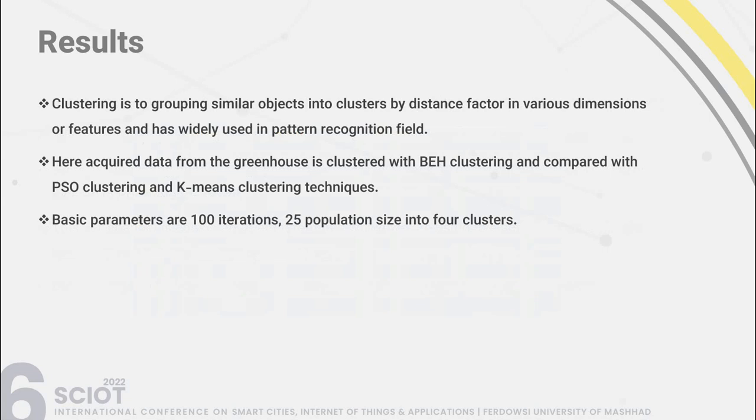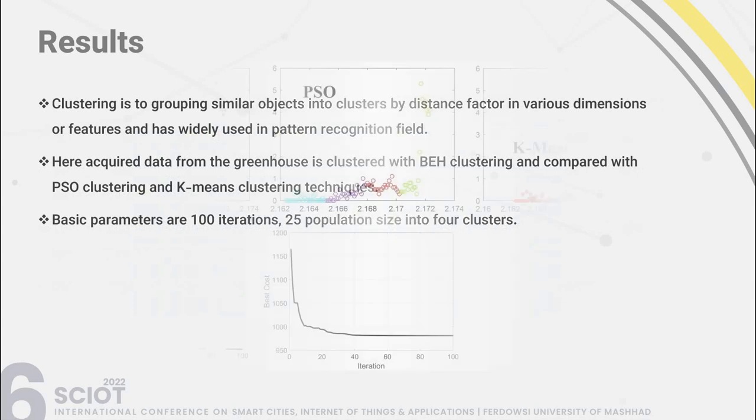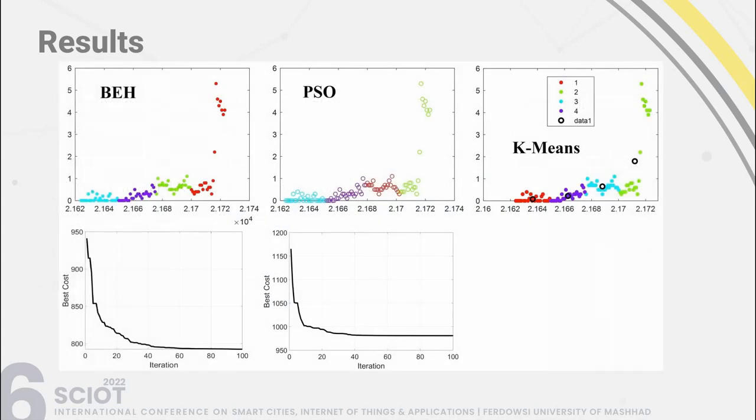Clustering is the grouping of similar objects into clusters by distance factor across various dimensions or features, and is widely used in pattern recognition. The acquired data from the greenhouse is clustered with BEHA clustering and compared with PSO clustering and K-means clustering. Basic parameters are 100 iterations and 25 population size in four clusters. The clustering results for BEHA, PSO, and K-means are shown, and the BEHA algorithm achieves a lower cost function in 100 iterations, though results are otherwise similar.